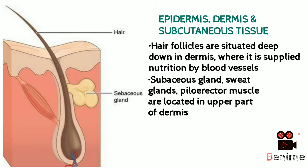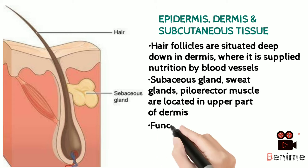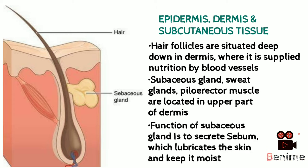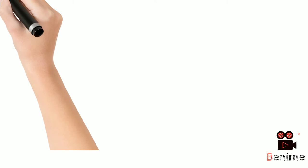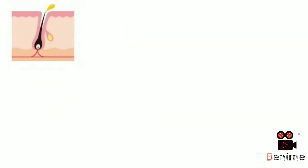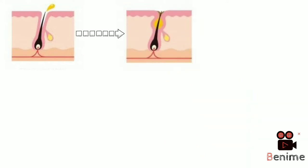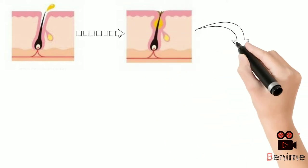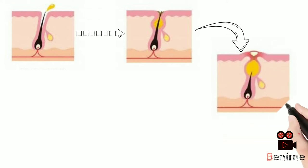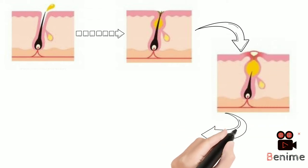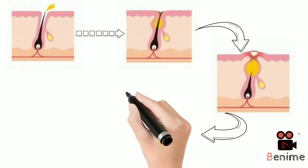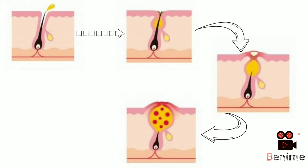Since we are discussing acne, we should note that the sebaceous gland helps in secreting sebum, which lubricates the skin and keeps it moist. However, because of different reasons, the pores of the skin get blocked, resulting in continuous deposition of sebum in the skin, which later gets infiltrated with pathogenic microbes like bacteria.